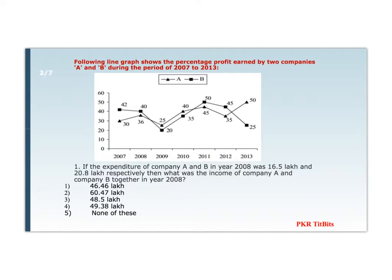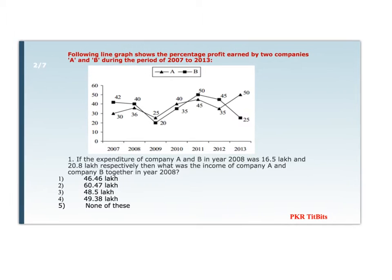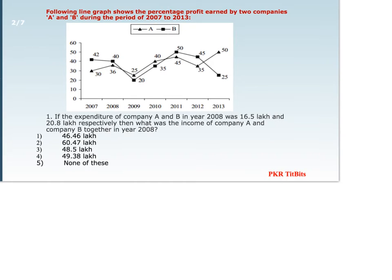In my previous video on income and expenditure data interpretation, I have discussed a few important things to remember before solving this type of question, so please refer to that video. Now coming to this question, they have given two companies A and B during the period 2007 to 2013. The profit percentage of company A is represented by triangles and profit percentage of company B is represented by squares.